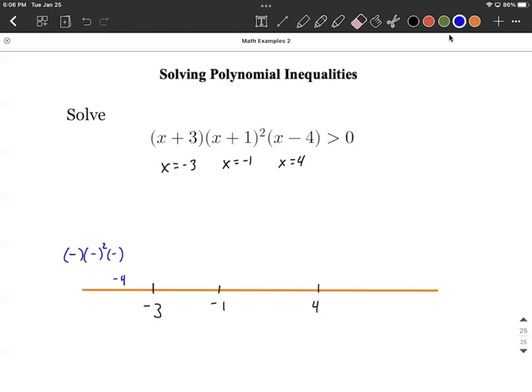From here, let's count up how many negatives are being multiplied together. You can see that we have one, two, because it's squared that's going to be three and then a fourth one. So four negatives all multiply together to overall make it positive. So we're going to put a big positive up above our number line in that section. Next, we're going to repeat it between negative three and negative one.